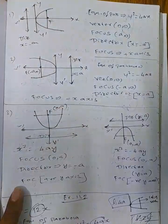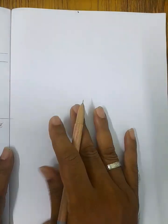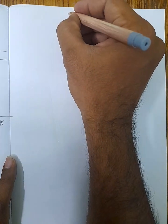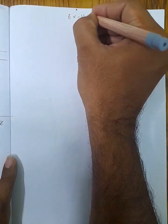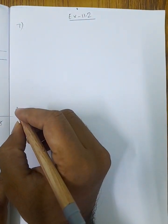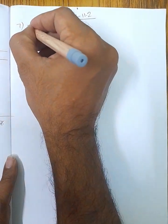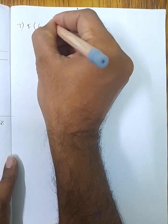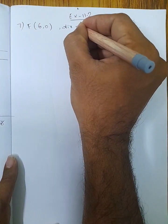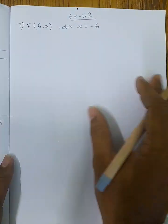Let's recall the 7th question in exercise 11.2. So focus is at (-6, 0) — that is, focus value minus 6, 0 — and directrix is x = 6.